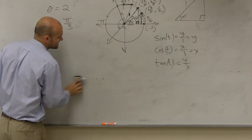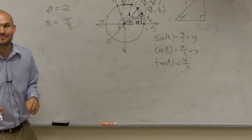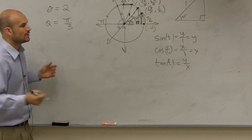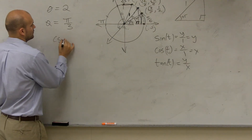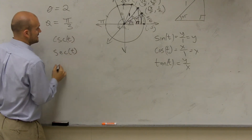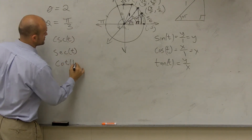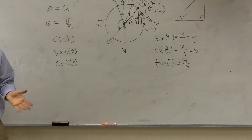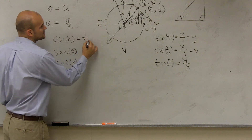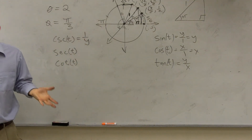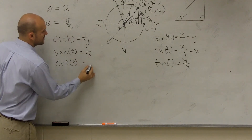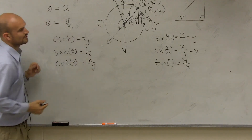The last thing we talked about was our reciprocal identities — cosecant of t, secant of t, and cotangent of t. These are the reciprocals. So if sine is y, the cosecant is one over y. The secant is going to be one over x, and the cotangent is going to be x over y.